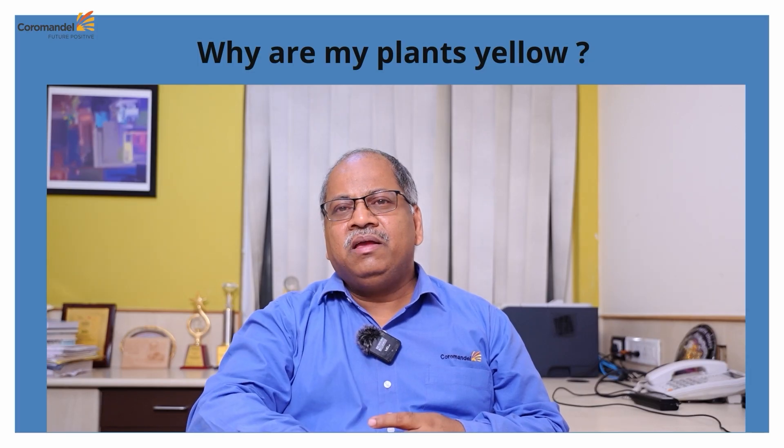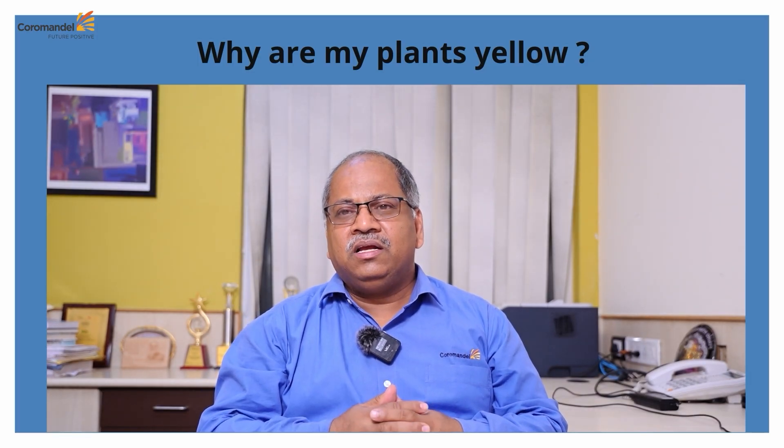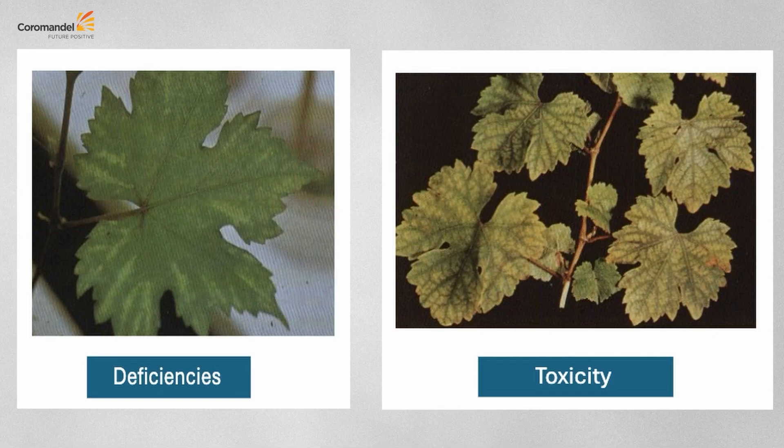Greetings from Krishi International. Welcome to another episode of Agri Expert Talk. Today's topic is understanding deficiency in crop production for various nutrients — why plants turn yellow. The illness of plants is mainly because sometimes it is due to the deficiency of a nutrient, and sometimes because of the toxicity of a nutrient. On the left side it is due to nutrient deficiency and on the right side it is due to manganese toxicity.